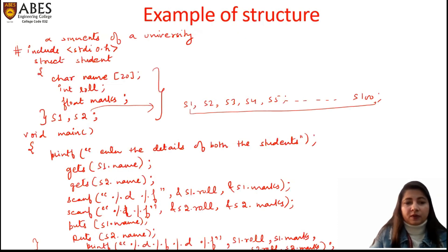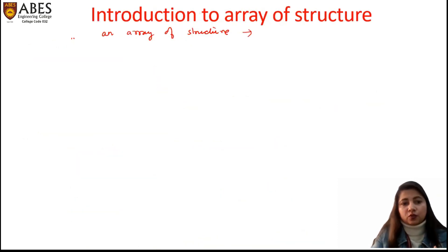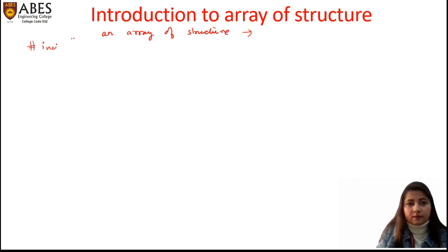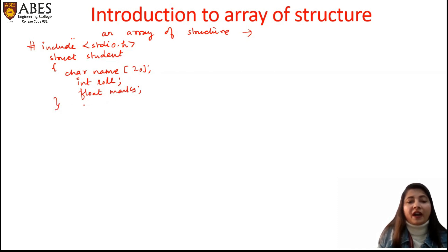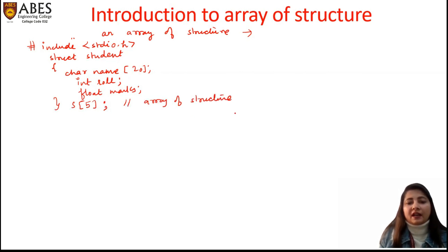For example, I want to store information for five students. I'll write the same structure: struct student with char name, int roll, and float marks. Now instead of taking five separate structure variables, I can create an array of size 5 — struct student s[5]. This is an array of structure where each and every member of this array is a structure itself.